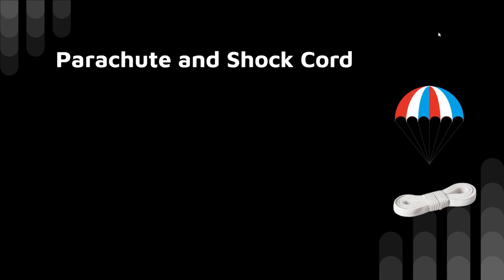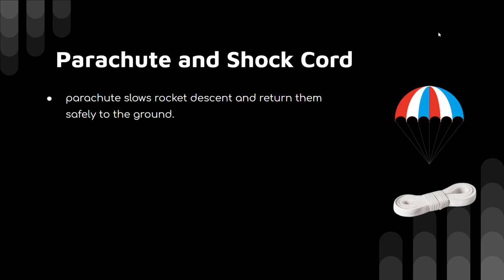The next important component is the parachute and shock cord. We obviously want our model rocket to return so we can test various models. The parachute slows the rocket's descent and returns it safely to the ground. Imagine a rocket reaching 500 meters or even 200 meters — using basic physics, you can calculate the velocity at which it approaches the ground, and the momentum of even a 100-gram rocket at that speed is significant. The parachutes are generally made up of polythene or cellophane, or any other light material with sufficient strength to withstand the air resistance force.